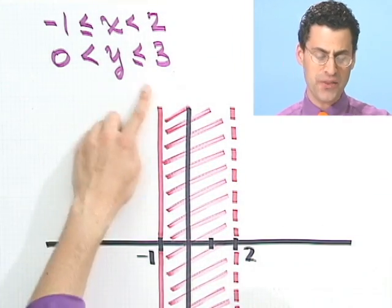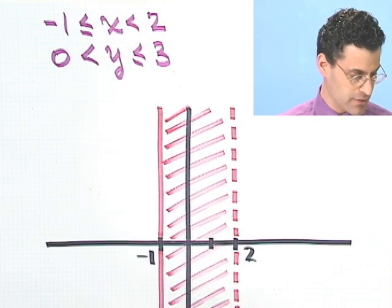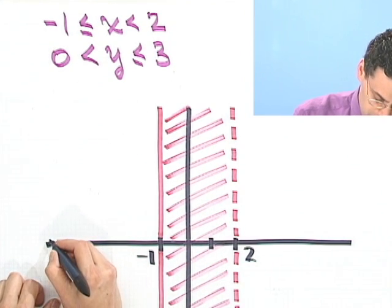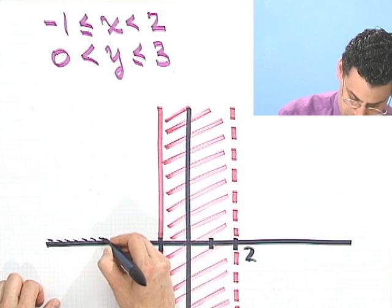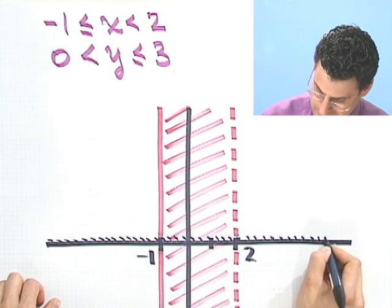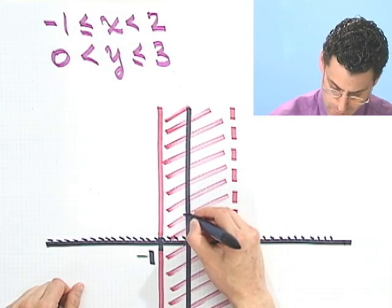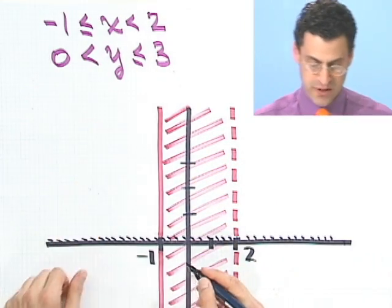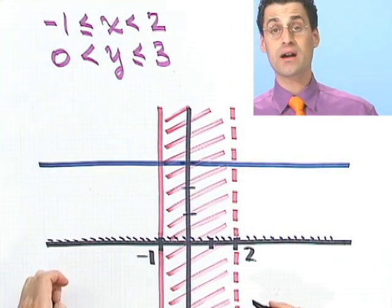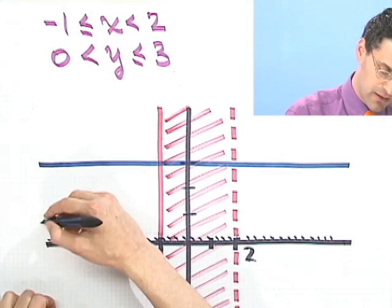Now for the y condition: y is greater than zero but less than or equal to three. y equals zero is just the x-axis, and I have to put a dotted line there to show it's not included. Then y less than or equal to three means I go up to three and I'm allowed to equal three, so I put a solid horizontal line right there. Now I fill in the band between those two lines.